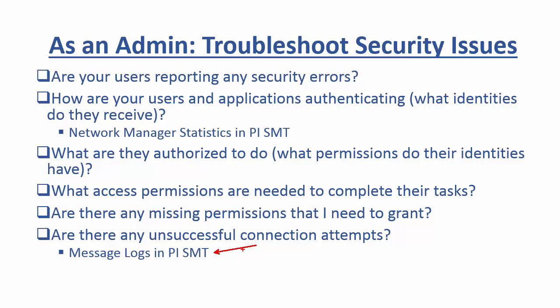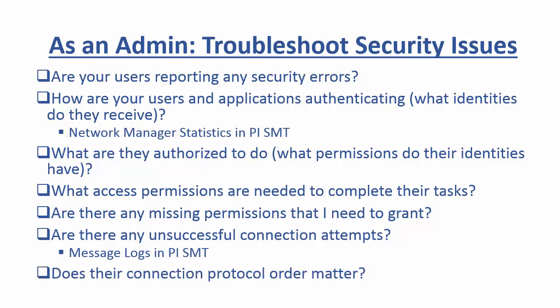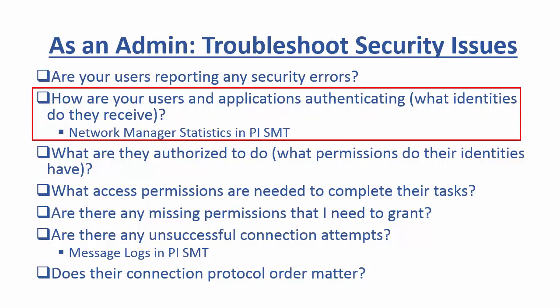And finally, at the very end, if for some reason a user or application doesn't seem to be receiving a mapping or a trust when one has been correctly configured, we'll look at whether the connection protocol order matters. So let's start off by checking how our users or applications are authenticating with the network manager statistics in PI System Management Tools.